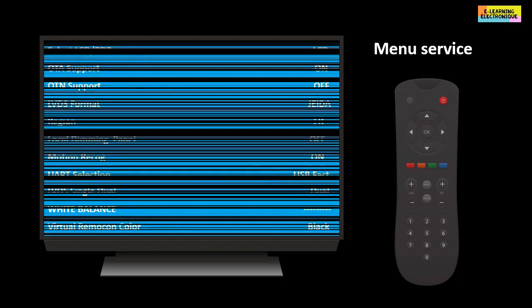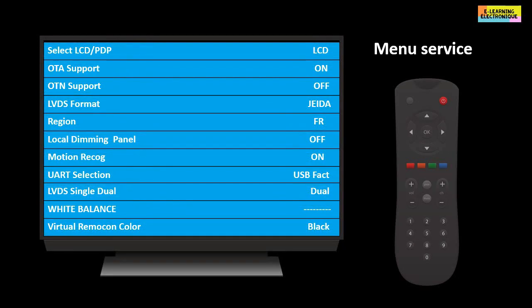This VESA and JEIDA format problem can be solved in two ways. The soft way is to make the change by accessing the menu service of the television. This is a hidden menu that can be accessed in different ways depending on the TV model. You just have to find the line corresponding to the LVDS format and then select the appropriate standard.